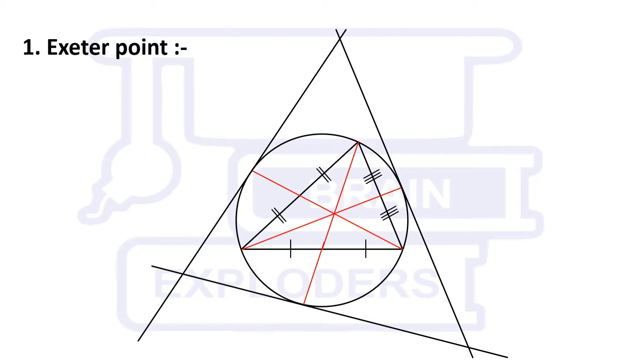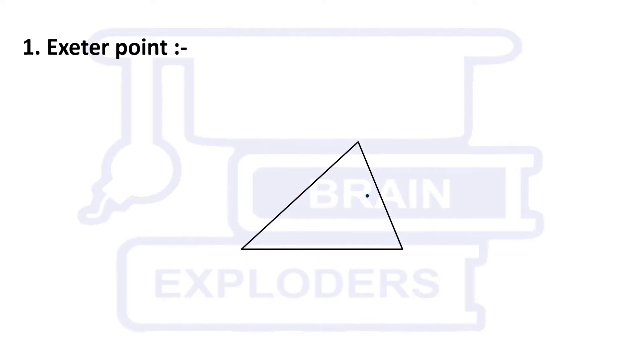These tangents form another triangle. Draw three lines which pass through the corresponding vertices of new triangle and original triangle. We find that these lines are concurrent and the point of concurrence is called the Exeter point.